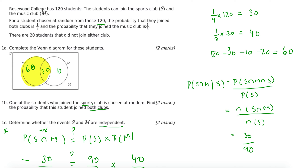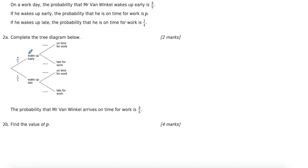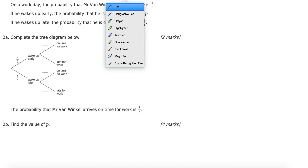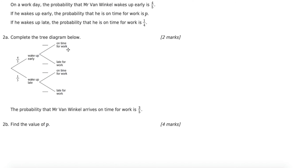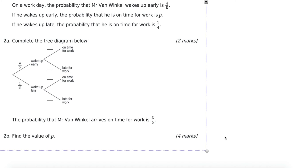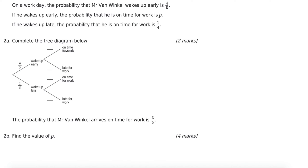The second example involves dependent events: the probability of waking up late does affect the probability of coming to work on time. The probability of coming on time will be different depending on whether you woke up early or late — these two events are dependent on each other. For this question, I need to complete the Venn diagram — actually, the tree diagram.